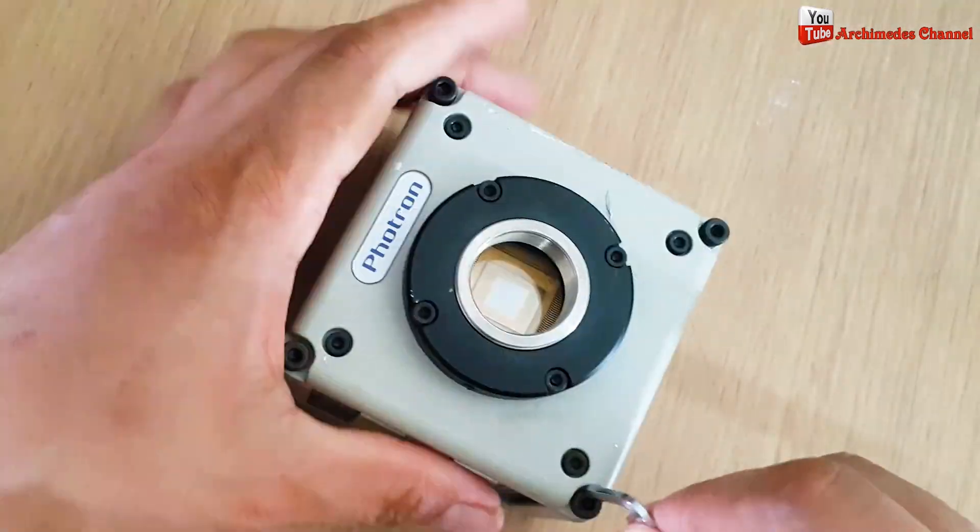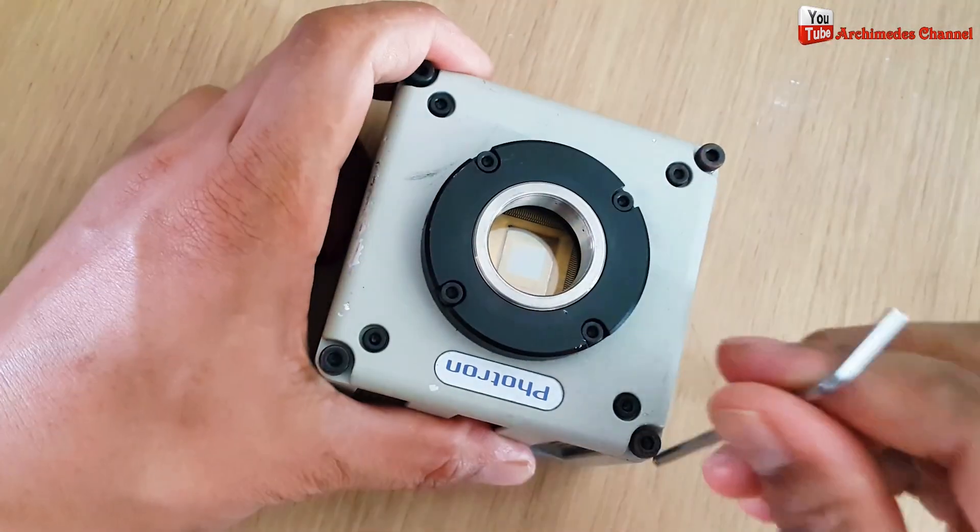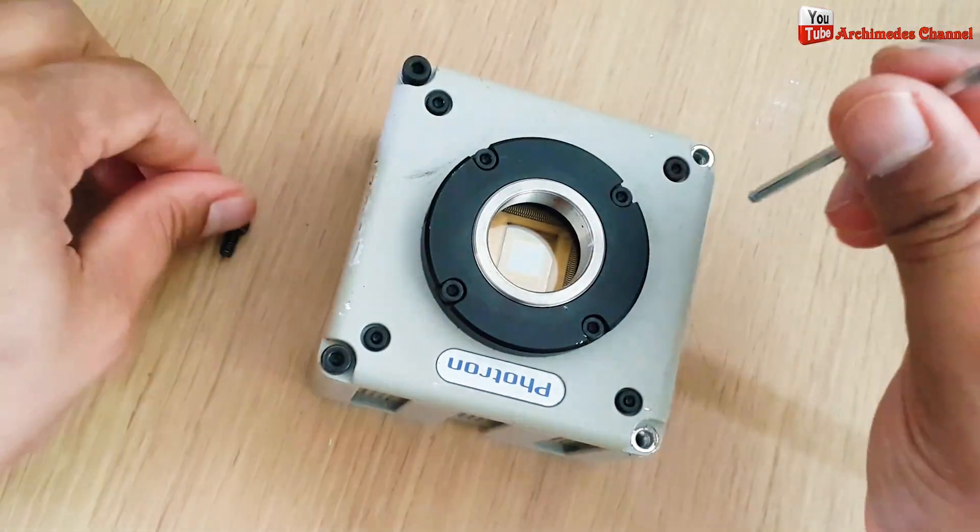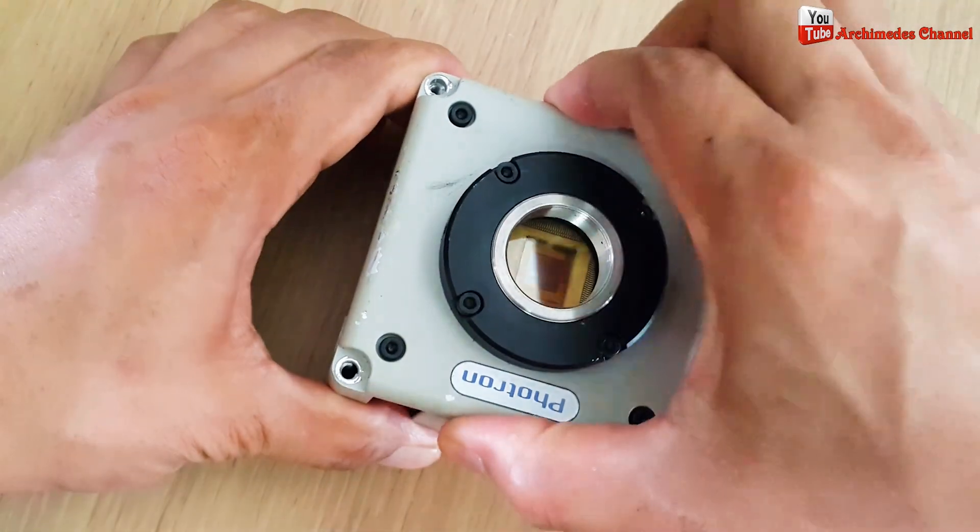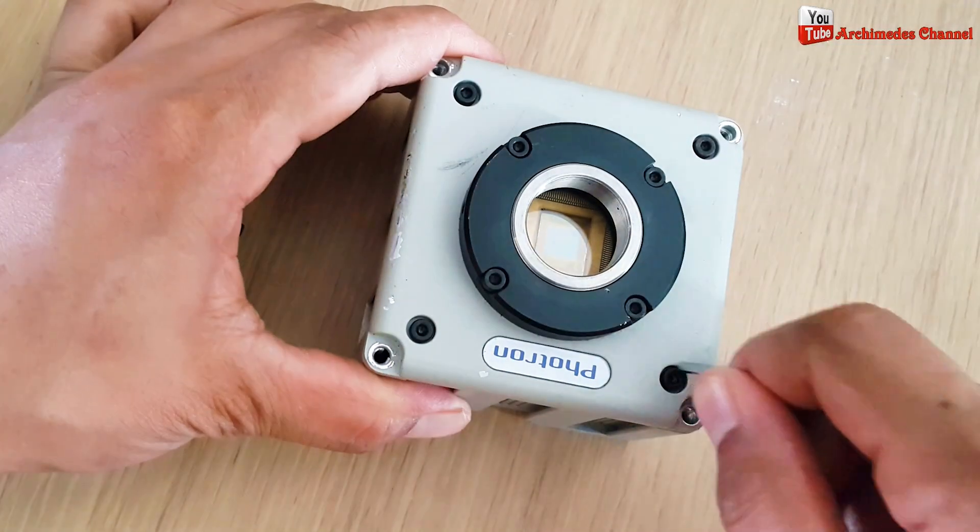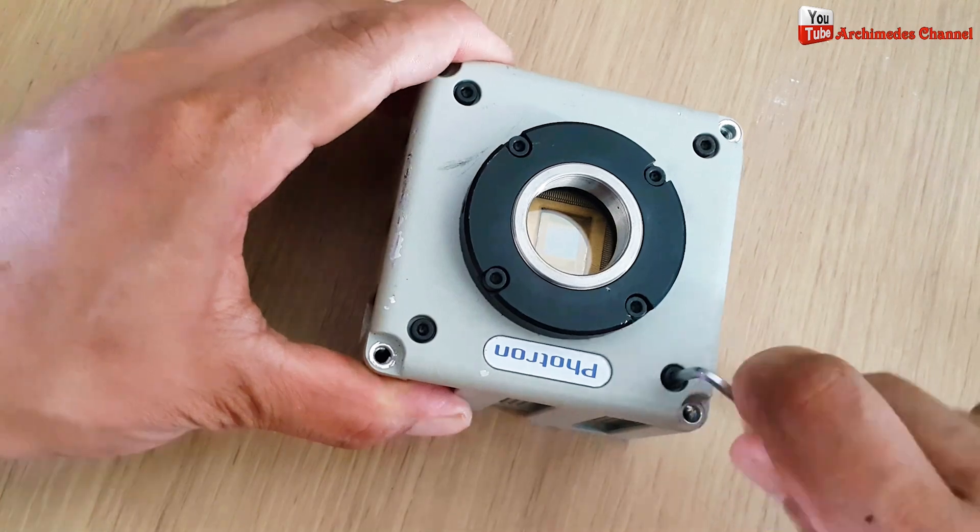To recover gold from a CCD camera, you will need to disassemble the camera and extract the CCD sensor. The sensor will likely be attached to a PCB, which contains a small amount of gold in the connectors and traces.